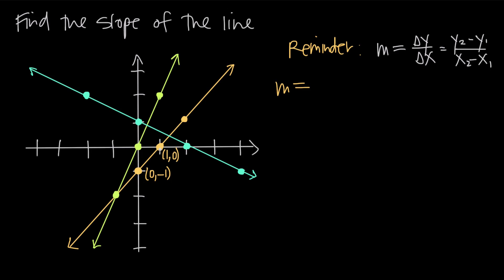To get from this point on the line to that point on the line, how far do I have to go up along the y-axis? I just have to go up one unit, so my change in y is 1. Since m is change in y over change in x, I put 1 in the numerator. To get out to the second point, I have to go one unit in the positive direction of the x-axis, so my change in x is positive 1. Therefore m equals 1 over 1, or just 1.